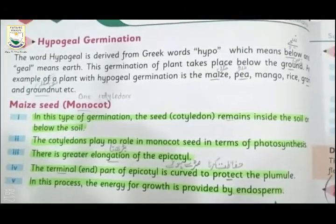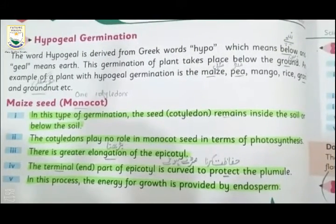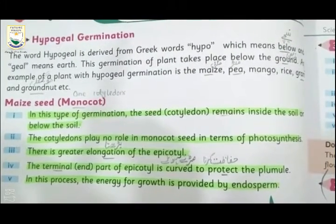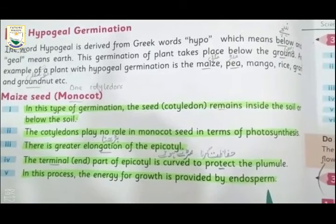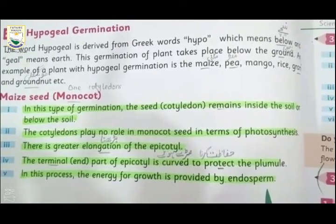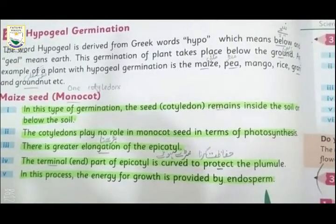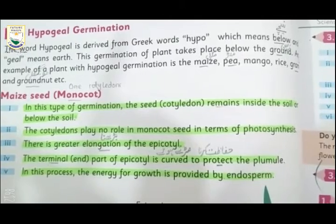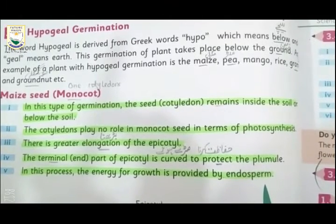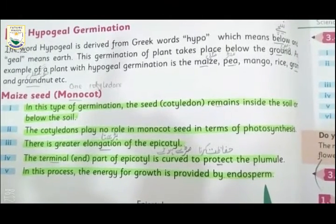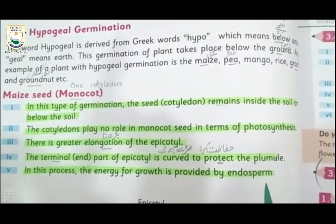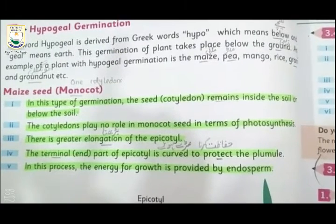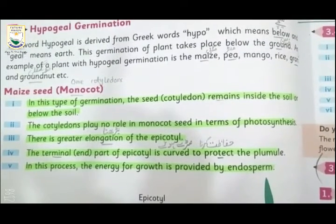The word hypogeal is derived from the Greek word 'hypo' which means below and 'gil' means earth. This germination of plant takes place below the ground. For example, plants with hypogeal germination include maize, pea, mango, rice, gram and groundnut.